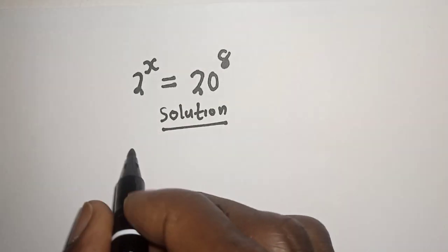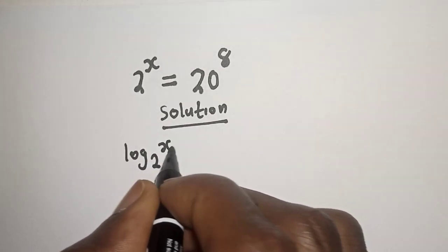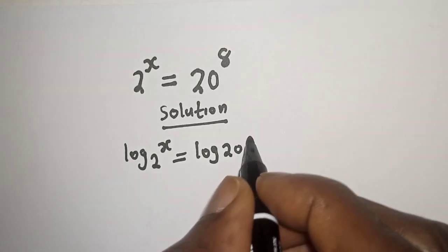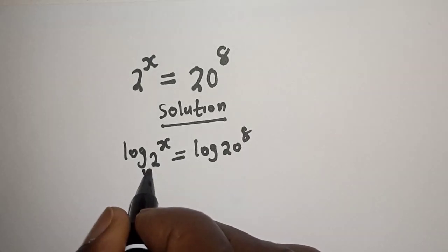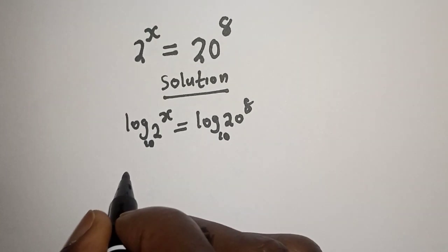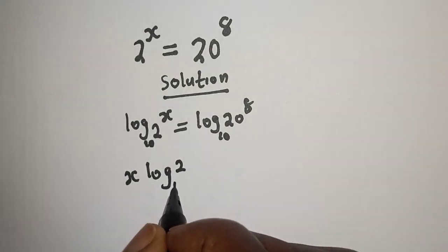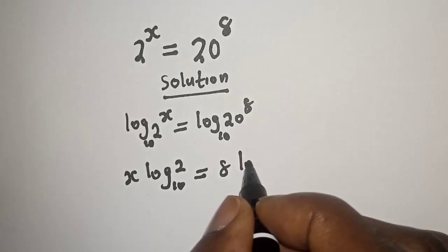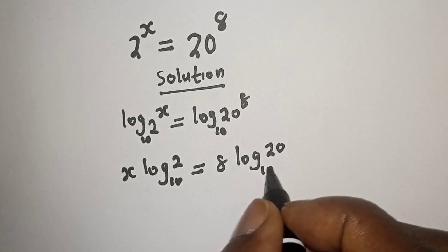Let's take the log of both sides. Log of 2 raised to power s is equal to log of 20 raised to power 8. Making everything base 10, we have s times log 2 base 10 is equal to 8 times log 20 base 10.